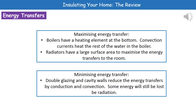We obviously want to reduce the amount of energy that we're losing from inside our home to the outside surroundings. We can do this by reducing conduction and convection. However, we're never going to be able to prevent all of our energy losses from the home — there will always be a small amount of energy lost through radiation.